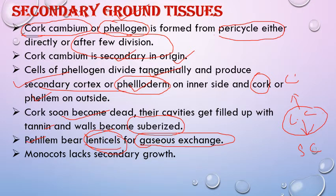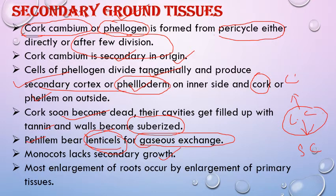Monocots do not show secondary growth because they lack vascular cambium — we have already discussed this. In monocots, the enlargement that occurs in roots is mainly due to the presence of primary vascular tissue formed by procambium.